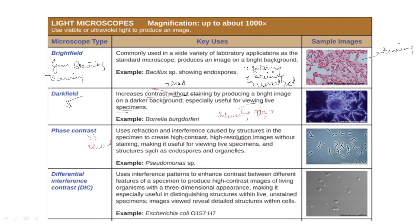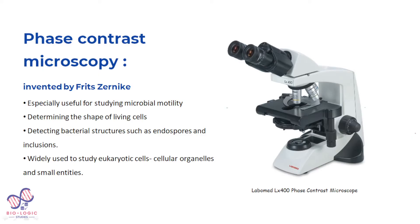Without staining, we can see live, living specimens — for example, endospores and organelles. The principle is refraction and interference. Whenever a light wave passes through a specimen, its refractive index changes. As the name suggests — Phase Contrast Microscope — we are talking about the phase of the light wave.